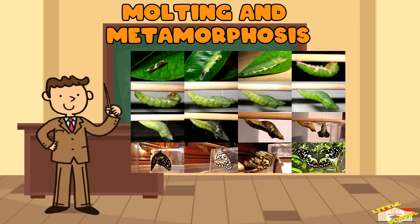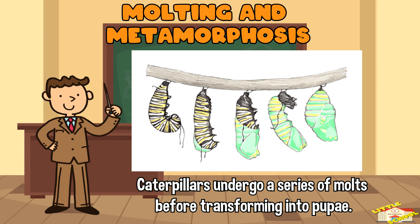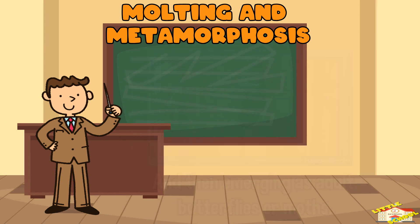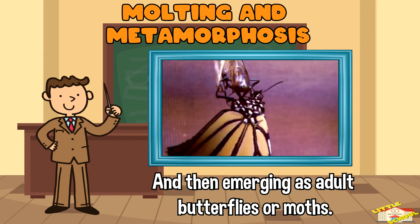Molting and metamorphosis: molting is often associated with metamorphosis in insects. Caterpillars, for instance, undergo a series of molts before transforming into a pupa and then emerging as adult butterflies or moths.